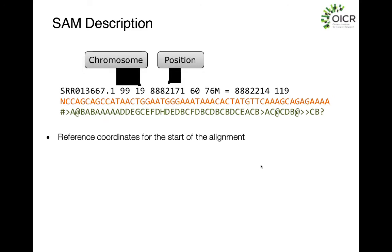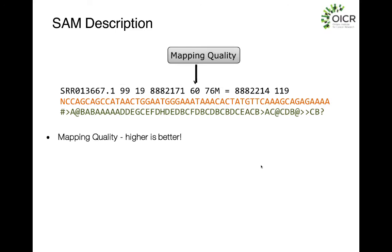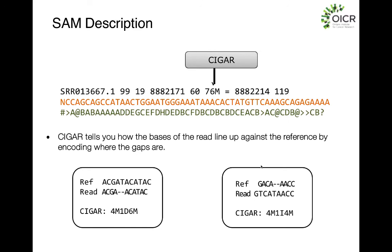Then you have the actual chromosome and position that your read maps to. Your mapping quality is also stored there — a value of 60 is the ceiling, meaning the best match possible. Then you have the CIGAR string, which explains how your read maps onto the reference. For example, 76M means 76 matches. One example shows 4 matches (ACGA), one deletion, then 6 matches. Another shows 4 matches, one insertion — a base present in the read but missing in the reference — then 4 more matches.